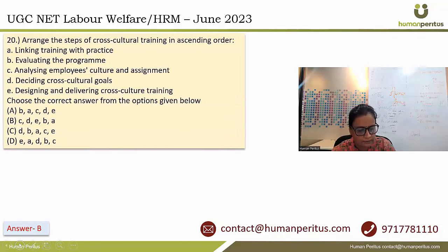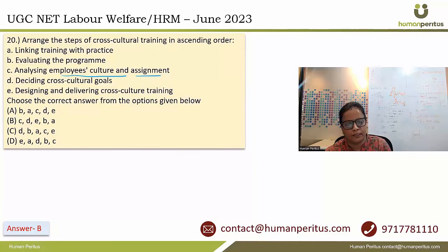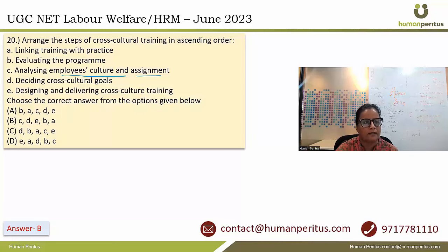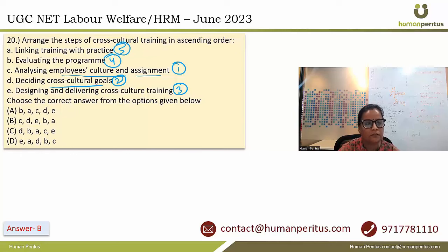In question 20, we have to arrange the steps of cross-cultural training in ascending order. The first step is analyzing the employee's cultural background and assignment context. Then we decide upon cross-cultural goals, followed by designing and delivering cross-cultural training. After that, we evaluate the program and finally link the training with practice. The correct answer is option B.